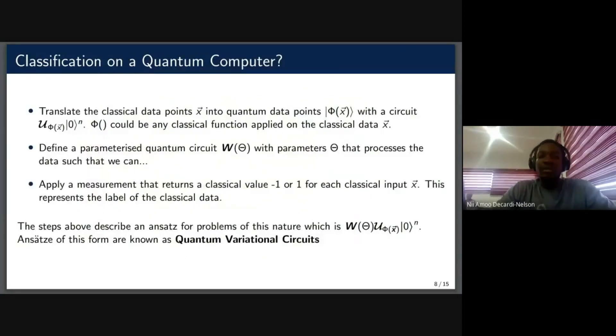So how would we proceed with classification on the quantum computer? The first step would be to translate your data points, your classical data points, into the quantum analog. And you'd use circuits for that. So this would be our unitary circuit. It takes in the qubits initialized at ket zero. And then it would apply an operation on it. This phi that you are seeing here could be any classical function that you apply on your data set prior to translating it into the quantum computer.